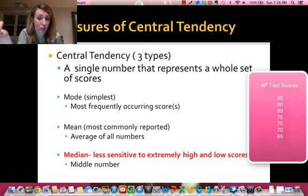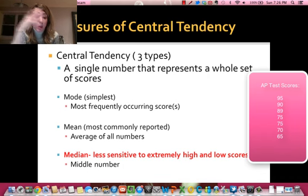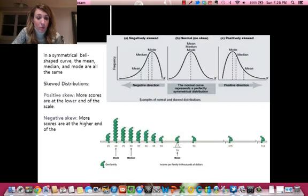For example, if I have a bunch of scores that are around 80%, but then all of a sudden I get a 40, that's really going to pull the mean down. But if I look at the median, the median is less sensitive to extremely high and low scores. So you want to use the median is the best way to tell the middle score.